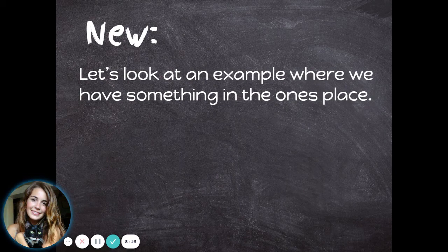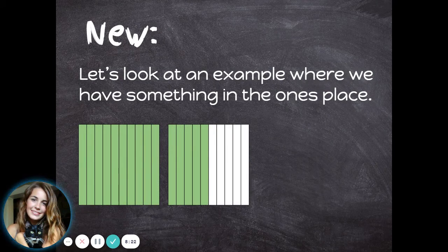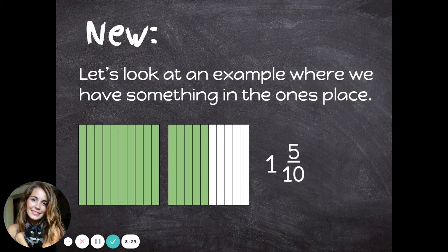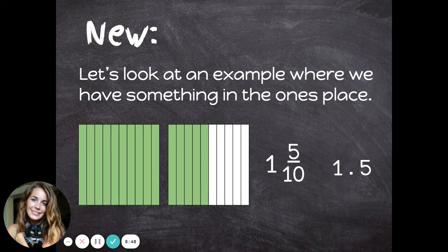Let's look at an example where we have something in the ones place. This time I have one whole shape shaded in and five-tenths of another shape, or one and five-tenths. To write this mixed number as a decimal, I would put a one in the ones place, because this time I do have one whole shape. Then comes the decimal, and then the five-tenths — I would just put a five in the tenths place. To write one and five-tenths as a decimal, I would write one decimal five.